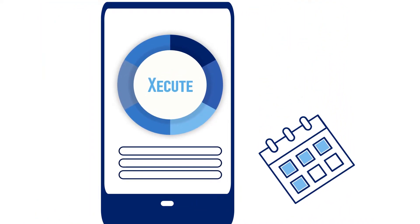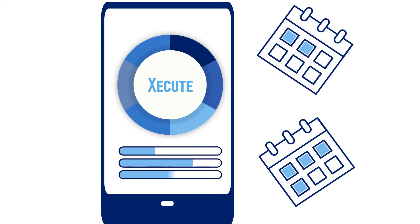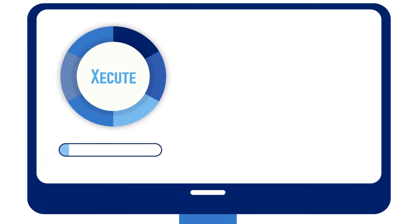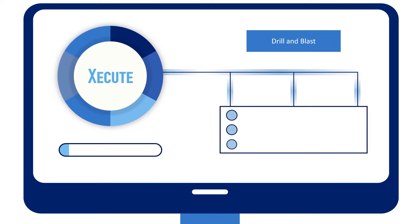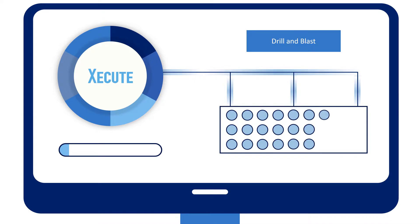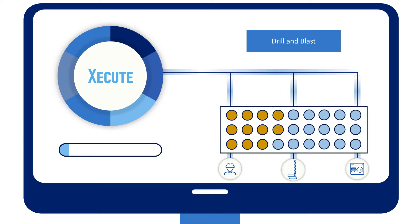Shift supervisors are also able to use the Execute mobile app to track progress against the plan. For drill and blast, hole by hole drilling progress is displayed in real time, with data automatically updated from a drill management system as the rig progresses through the shift. With open standard data interfaces, this data can come from any source.